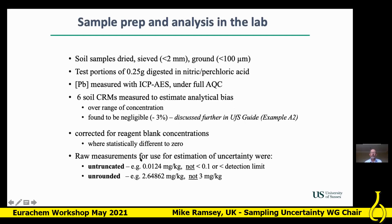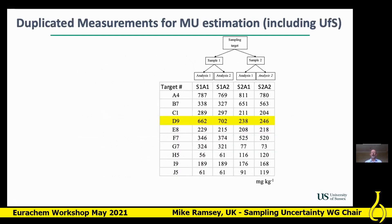We had untruncated data — no values below detection — and we kept all numbers without rounding. If data were rounded to, say, 3 mg/kg, a duplicate might appear to have perfect precision, which it obviously didn't.